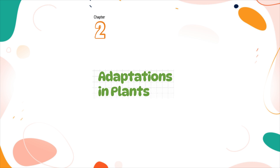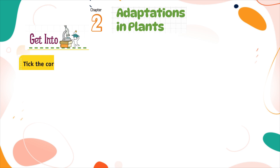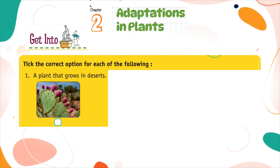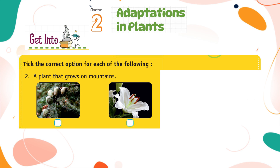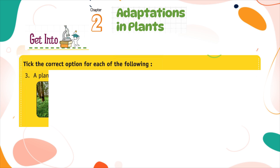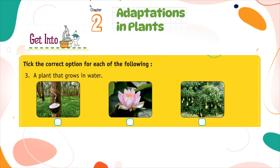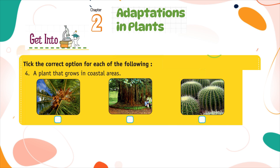Chapter 2: Adaptations in Plants. Tick the correct option for each of the following. Number 1: A plant that grows in deserts. Number 2: A plant that grows on mountains. Number 3: A plant that grows in water. Number 4: A plant that grows in coastal areas.